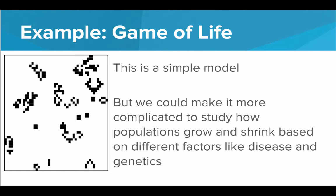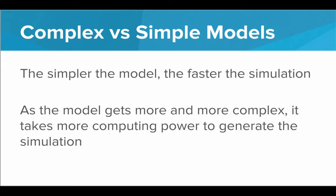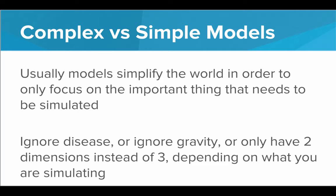But there are trade-offs when we're making our models simple versus complex. The simpler the model, generally the faster the simulation is going to be because there's less rules. The simulation can happen much faster without having to do that many computations. As the model gets more and more complex, there's more rules to keep track of and more calculations to do. So it takes more computing power to just generate the simulation. There's kind of trade-offs here. We need to decide when we want a simple versus a complex model.